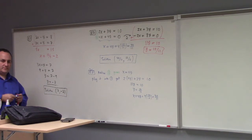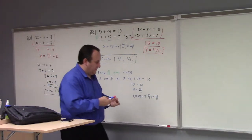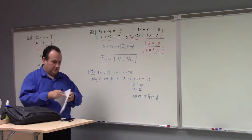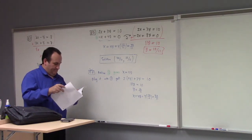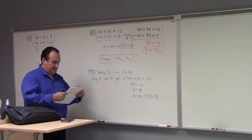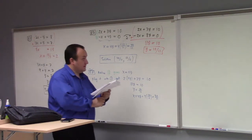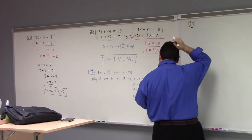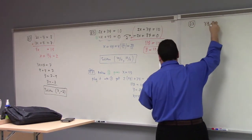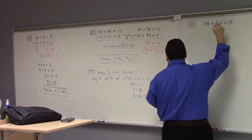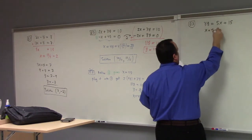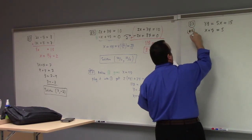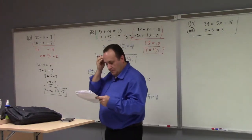Let me work another one that's a little different. Example 3: we come up against 3y equals to 5x plus 15, and x plus y equals to 5. This is number 16 from week 3. I'm supposed to solve this.